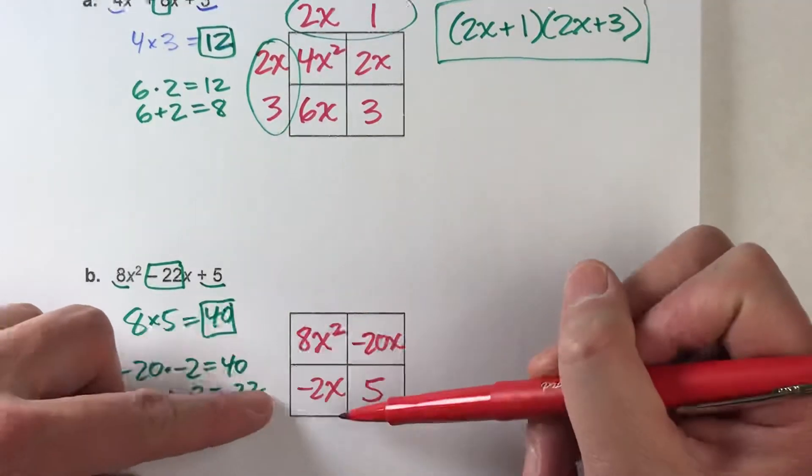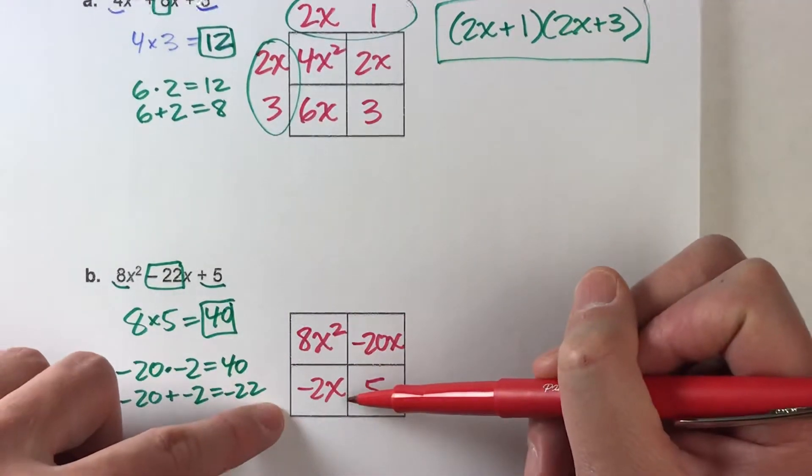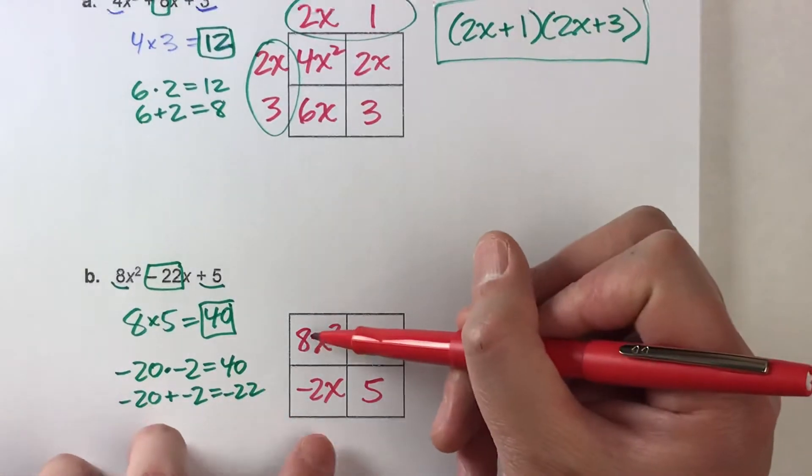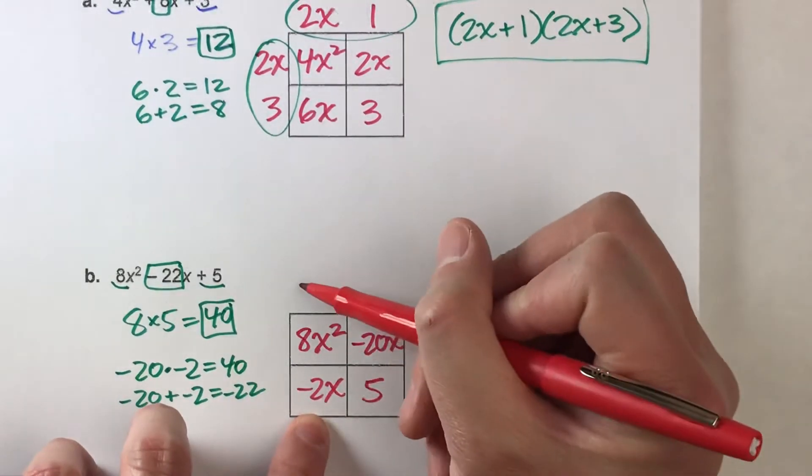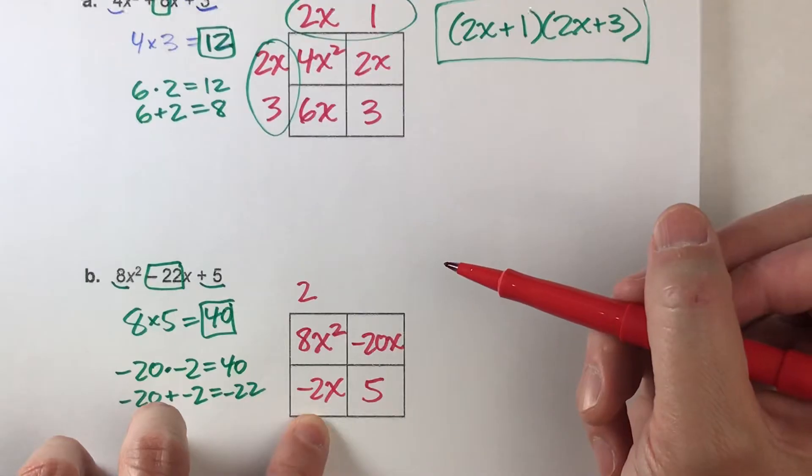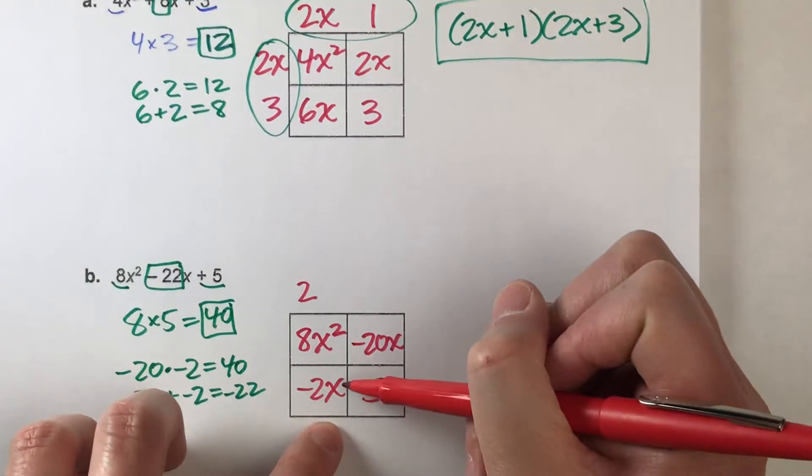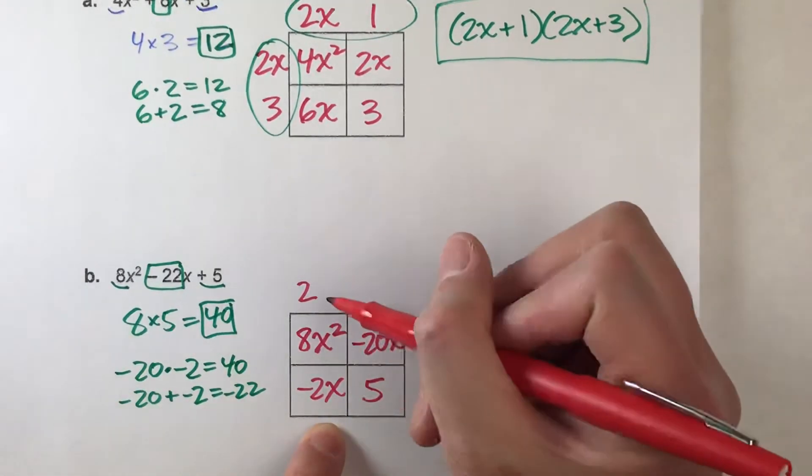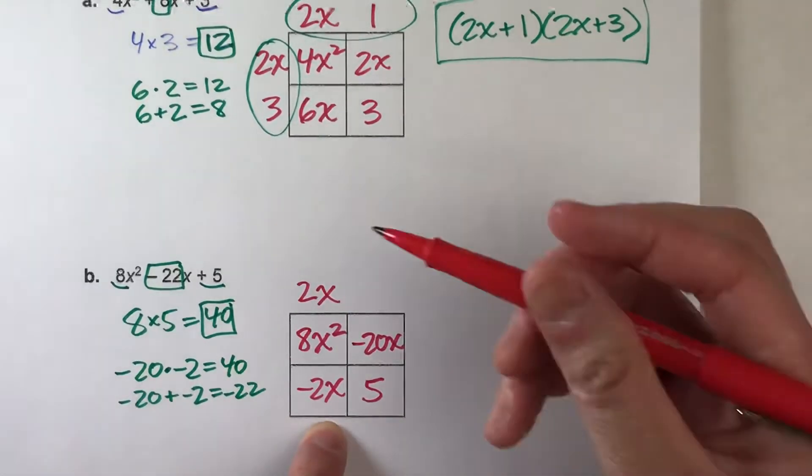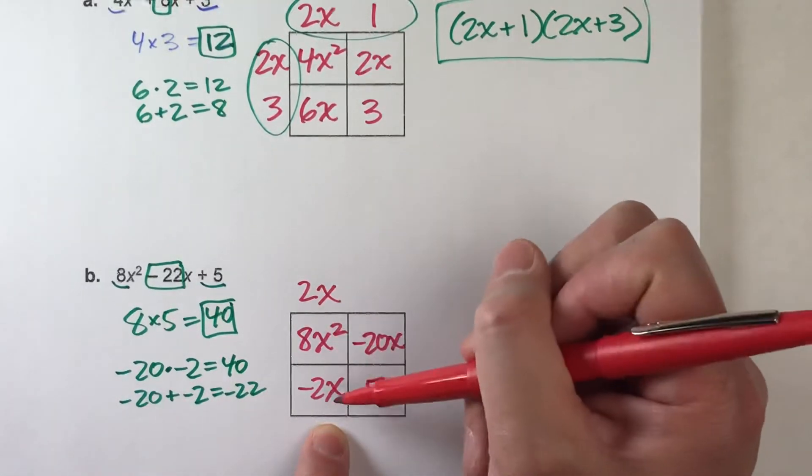So for this column, we've got 8x squared and negative 2x. What's the greatest common factor of 8 and negative 2? Well, 2 goes into both of them. And then x squared and x, what's the biggest number that goes into both? Well, x goes into both of them. So, 2x is our greatest common factor of this column.